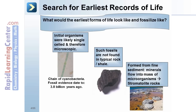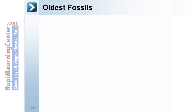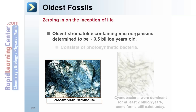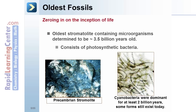Stromatolite rocks are formed from fine sediment where minerals flow into a mass of microorganisms. The oldest stromatolite containing microorganisms has been determined to be about 3.5 billion years ago. It consists of photosynthetic bacteria — cyanobacteria — which were dominant for at least 2 billion years, and some forms still exist today.